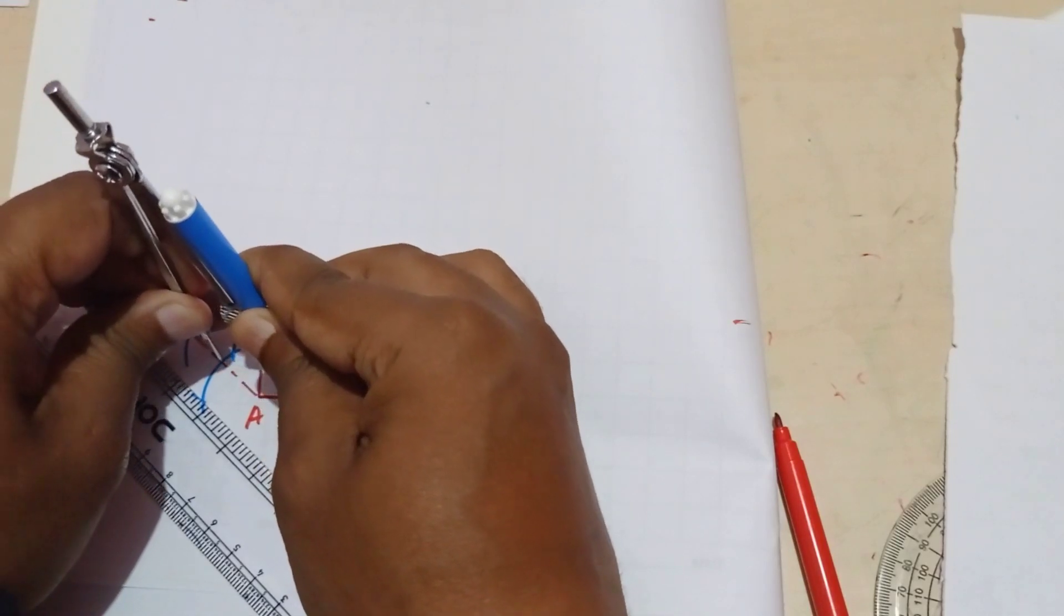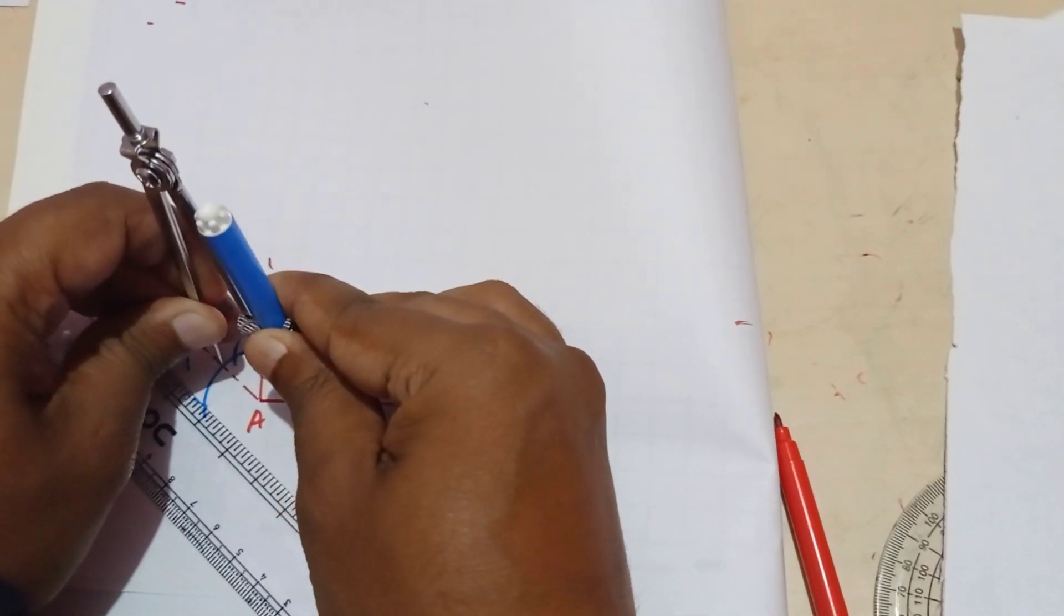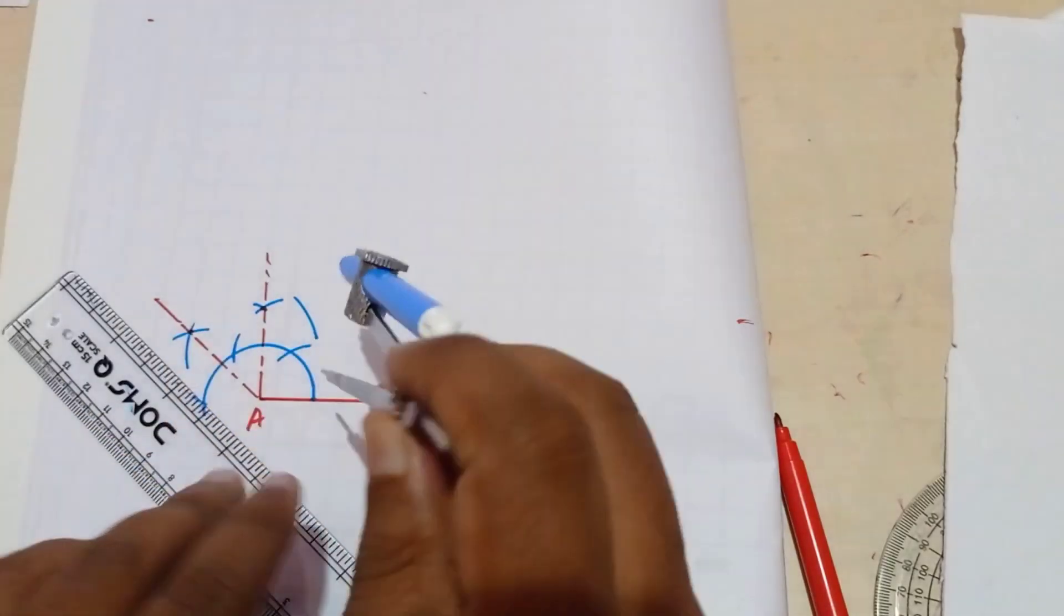So from this point just take more than the half. And draw an arc from this point.